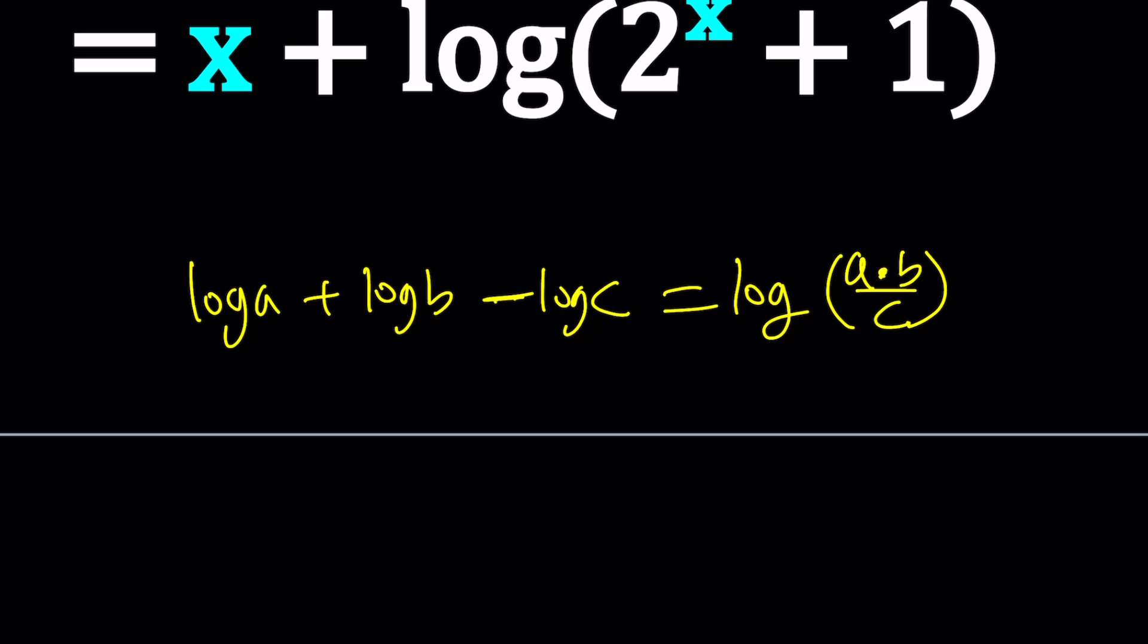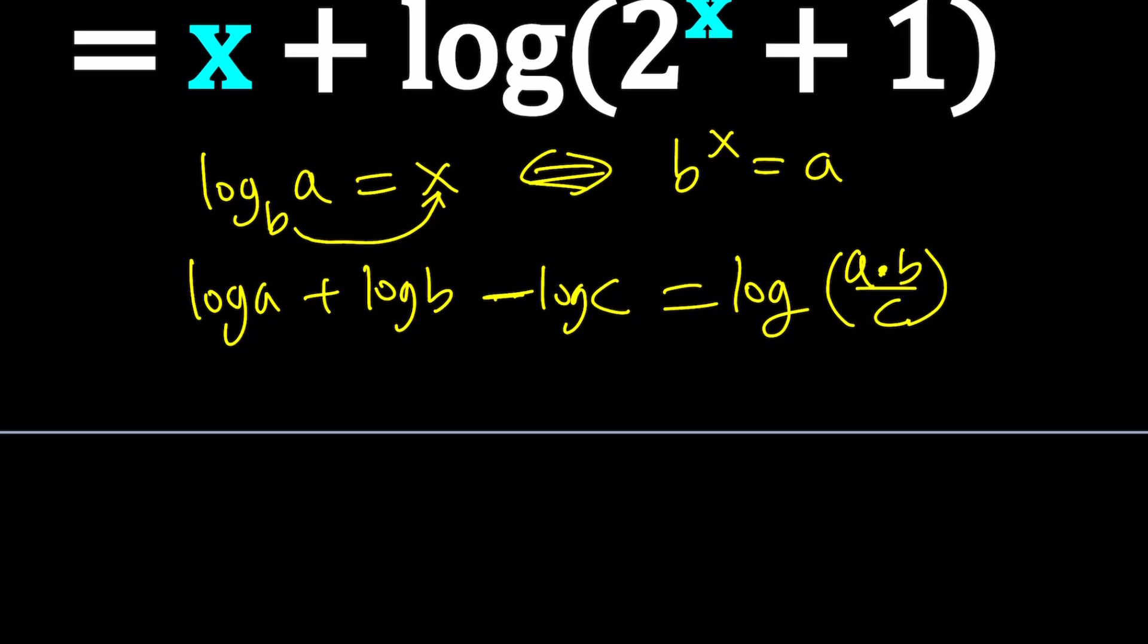It's the same thing as the properties of exponents, just backwards. The definition of logarithms is the most important thing to know. Whenever you have log base b of a, if and only if b to the x equals a. b is the base, x is the exponent. It's like finding the exponent operation. If you do the opposite of condensing, it's called expanding.